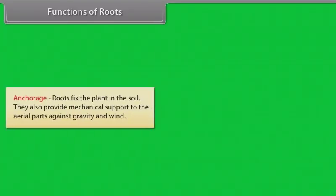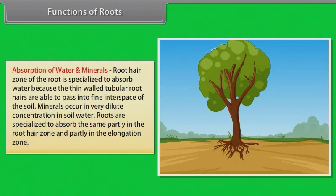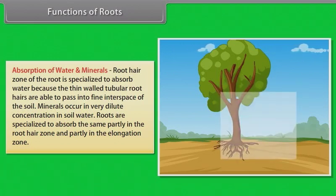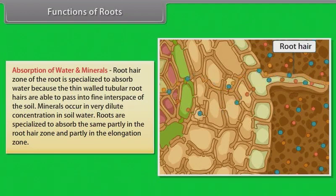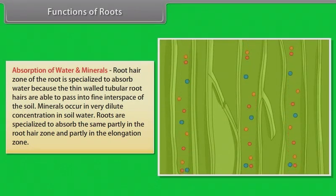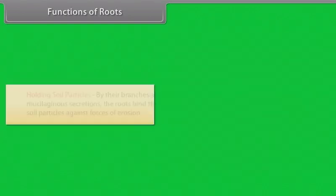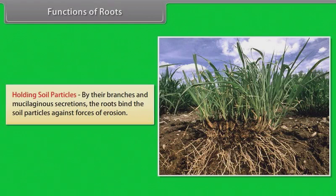Functions of roots. Anchorage: roots fix the plant in the soil and provide mechanical support to the aerial parts against gravity and wind. Absorption of water and minerals: the root hair zone is specialized to absorb water, as thin-walled tubular root hairs pass into fine interspaces of the soil. Minerals occur in very dilute concentration in soil water and are absorbed partly in the root hair zone and partly in the elongation zone. Conduction: water and minerals absorbed by rootlets are conducted through the root system to the shoot system. Holding soil particles: by their branches and mucilaginous secretions, roots bind the soil particles against forces of erosion.